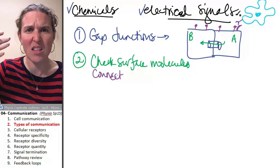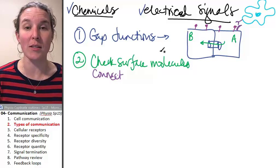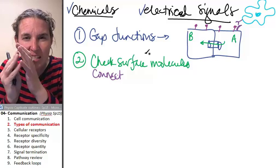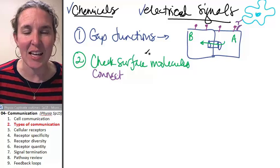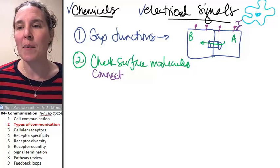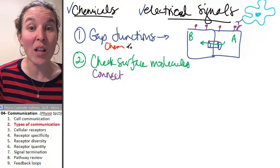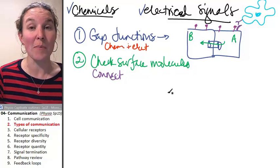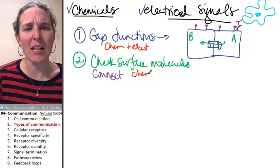If you don't fit, intruder in the house, and then we initiate an immune response. Actually contacting each other, like touching each other's faces, is another way that cells can communicate. Gap junctions allow for chemical and electrical messages to pass. Checking surface molecules is just chemical.